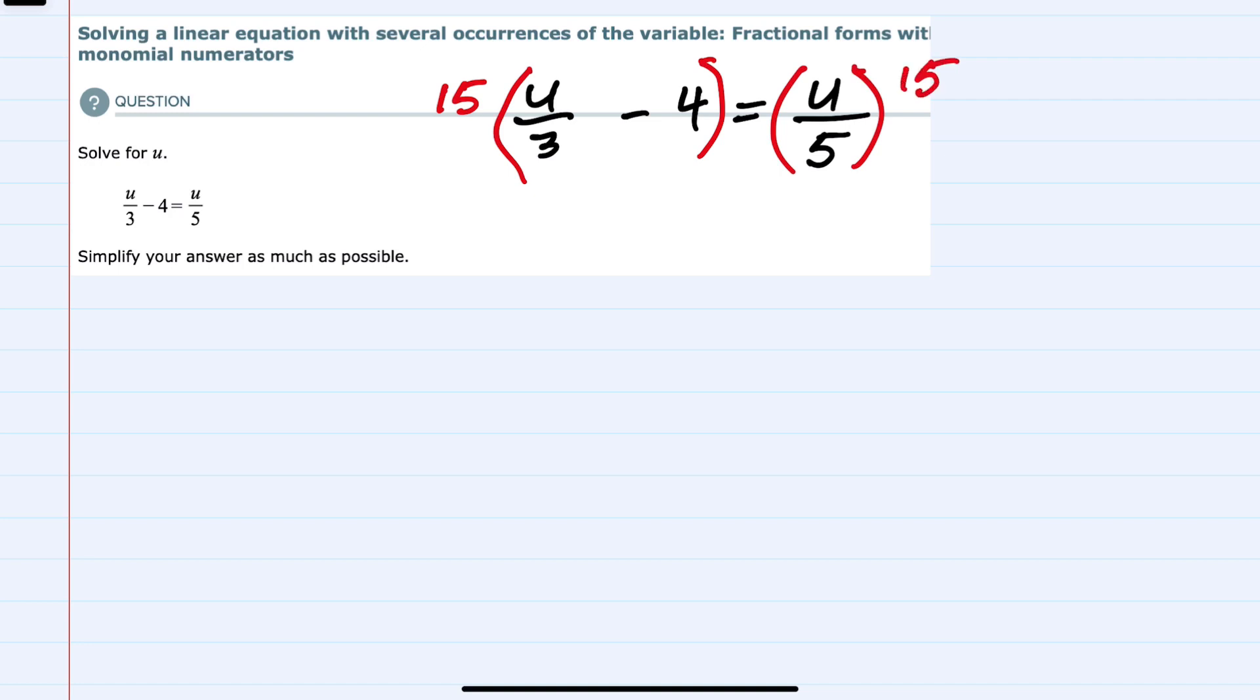Since I have two terms on the left hand side, I'm going to show that that would distribute to be 15 times u over 3 minus 4 times 15, or 15 times 4, equals u over 5 times 15.